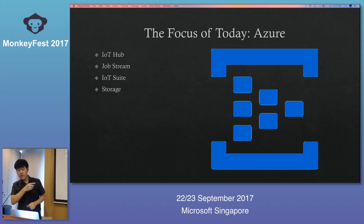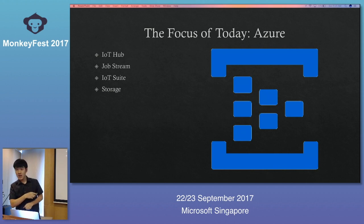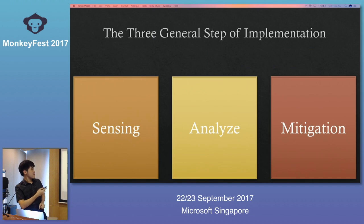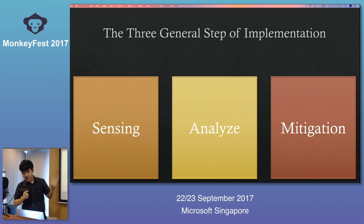If you've already used Azure, you know services like IoT Hub, Job Stream, IoT Suite, and Storage. I'm not going to go over the definitions — I'm going to focus on the applications of these services and on collecting data into the cloud. It's based on three main steps: sensing the data, analyzing, and mitigation.